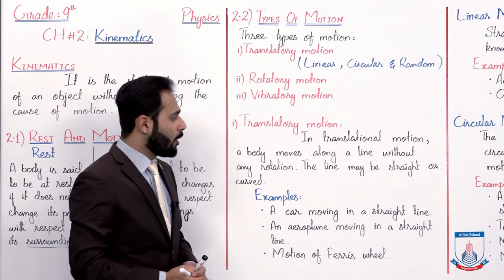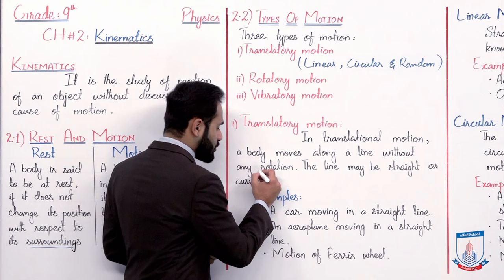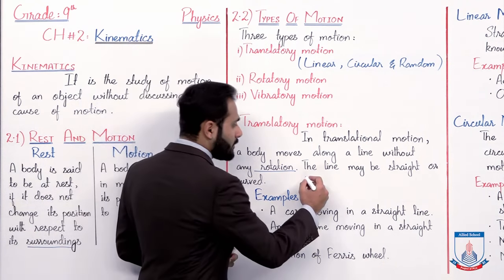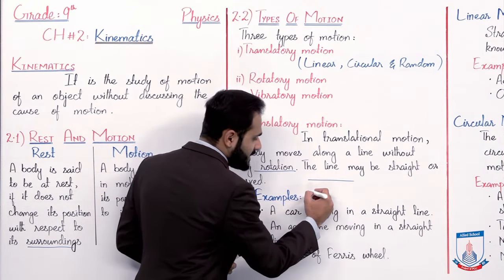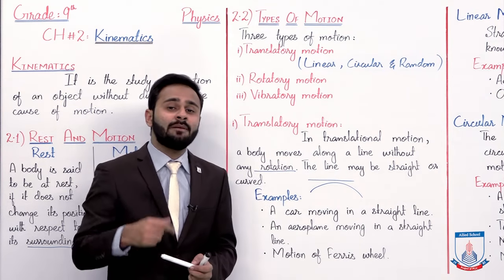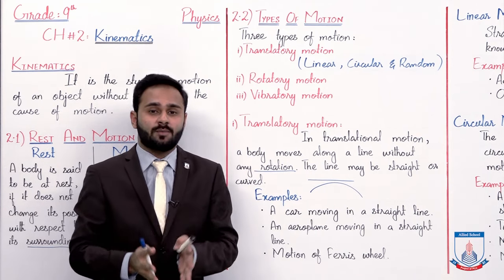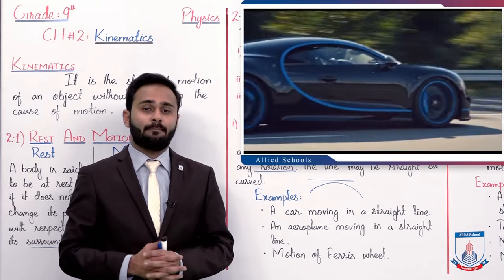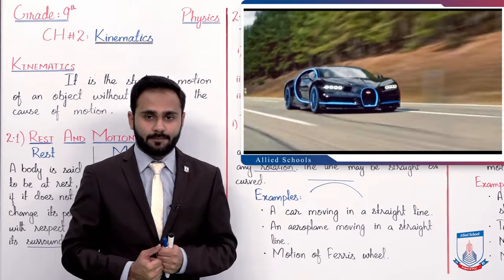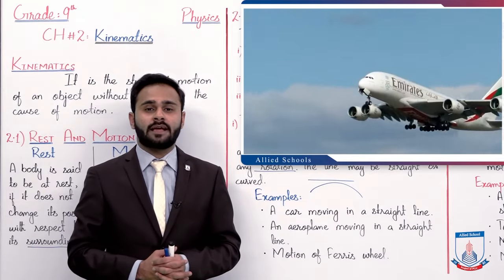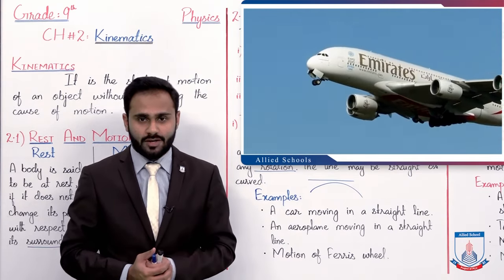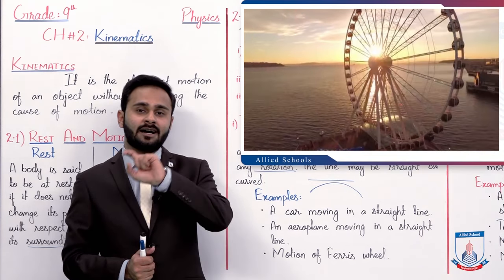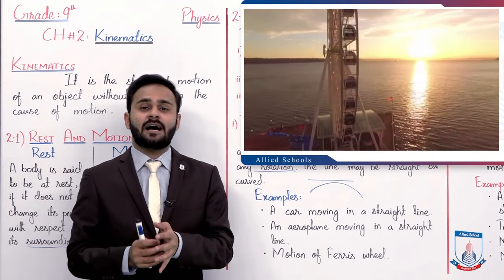In translational motion, a body moves along a line without any rotation, and the line may be straight or curved. That is, ek body jo straight ya curved line mein move kar rahi ho, usse hum kehte hain translational motion. Like a car moving in a straight line — iska translational motion hai. And similarly, an aeroplane moving in a straight line — iska bhi translational motion hai. And motion of ferris wheel — yeh bhi ek curved line mein move kar rahi hai, so iska bhi translational motion hai.